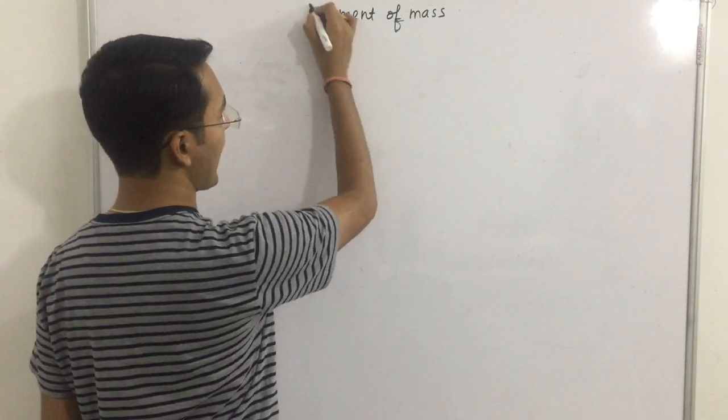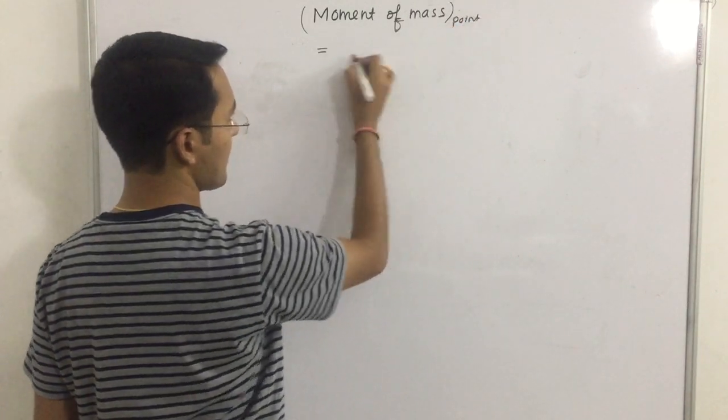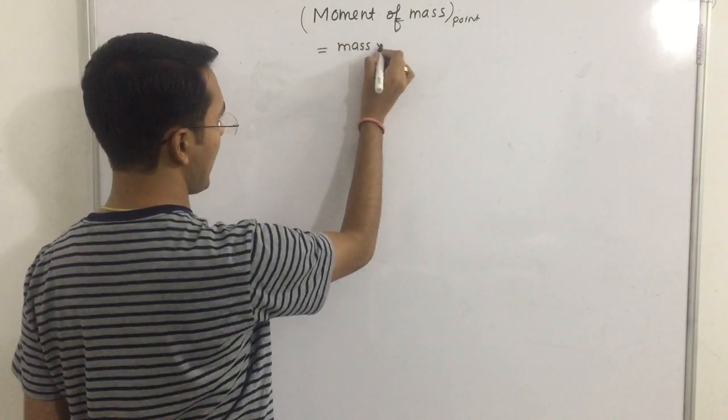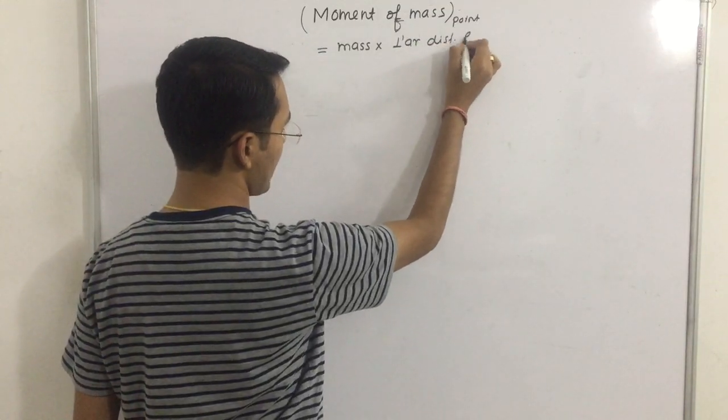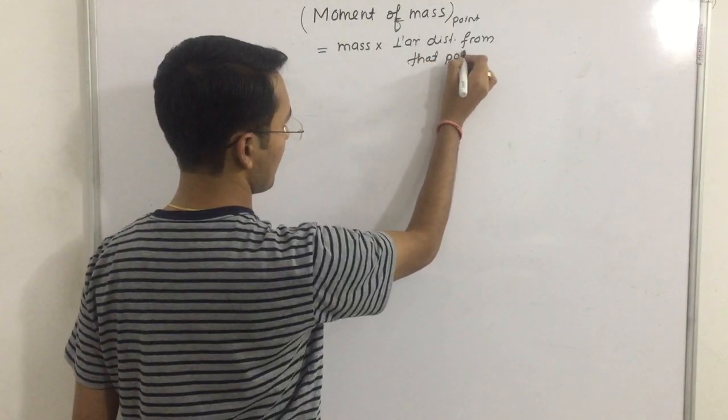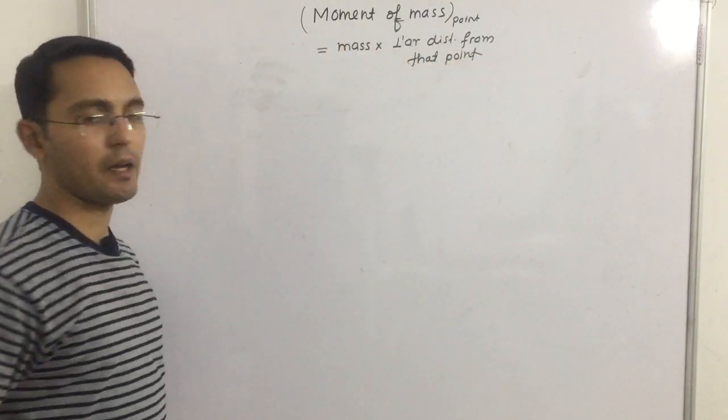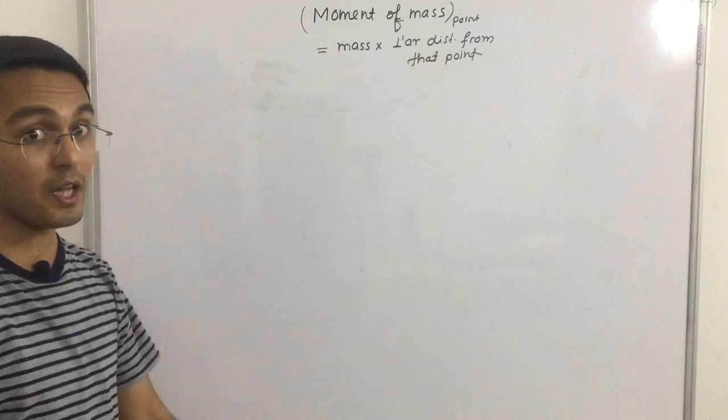Moment of mass about any point is defined as product of mass and perpendicular distance of that mass from that point. In physics, the moment of mass is defined as product of mass and perpendicular distance of that mass from that point.